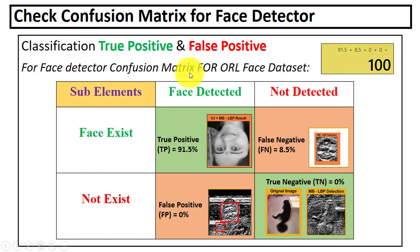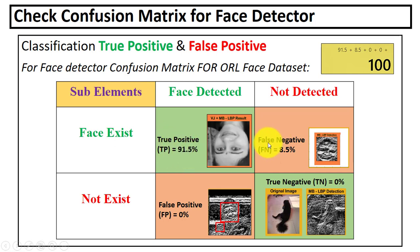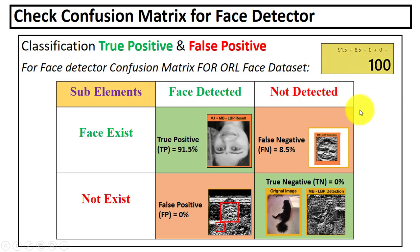For the ORL face dataset, this is the confusion matrix: the true positive rate is 91.5 percent, the false negative rate is 8.5 percent, and the other values are 0. The rows sum to 100. That's all about this video — how we can compute the true and false positive values for any face dataset. If you have any questions, you can comment below. Thanks for watching.